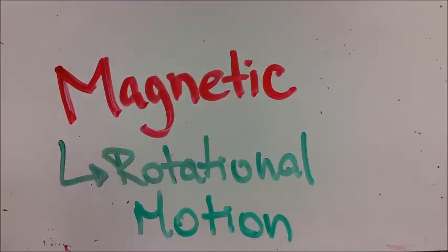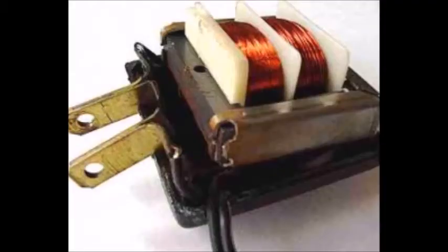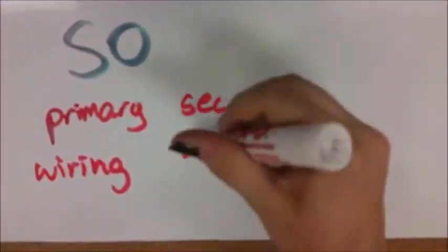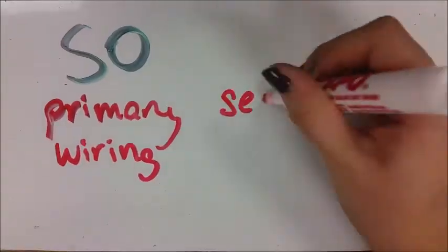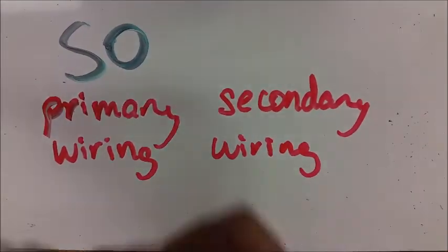The secondary winding wraps around the same core. The voltage in the secondary is controlled by the ratio of the numbers of turns in the two windings. So, if the primary and secondary windings have the same number of turns, the primary and secondary voltage will be the same. If the secondary has half as many turns as the primary, then the voltage in the secondary will be half.